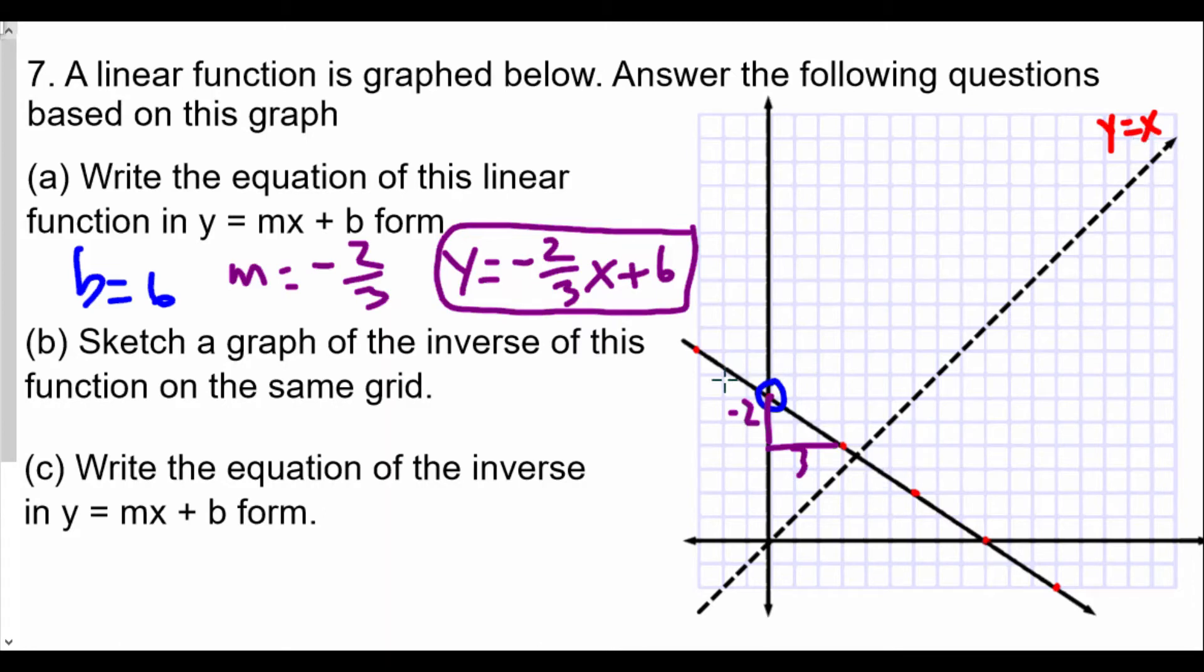Now we're going to reflect these points over this line y = x. We can list the coordinates and then switch x and y. This coordinate here is 0, 6. The next point is 3, 4.